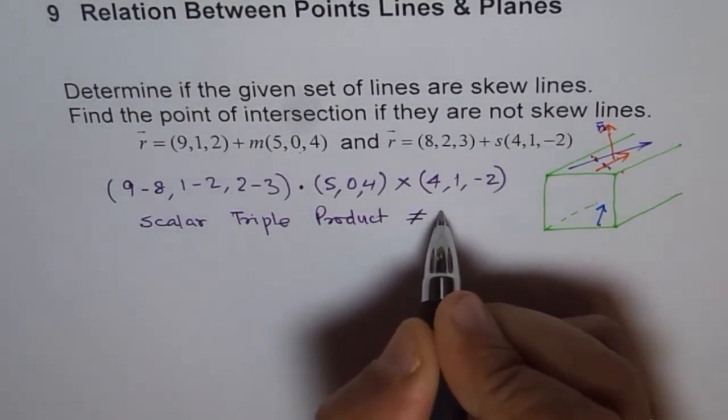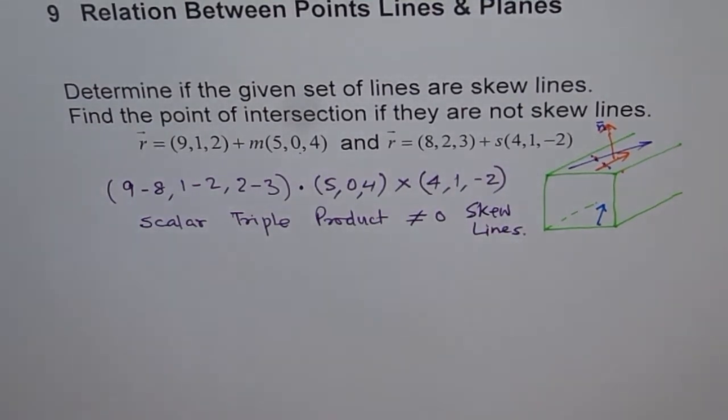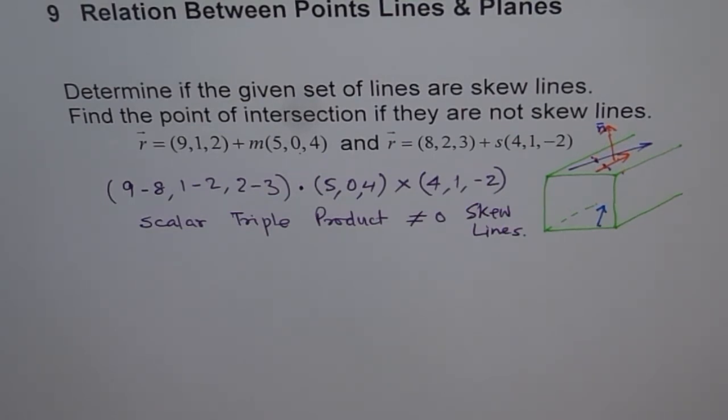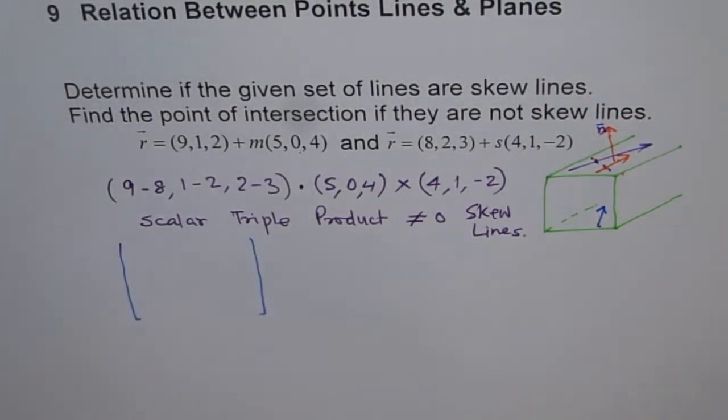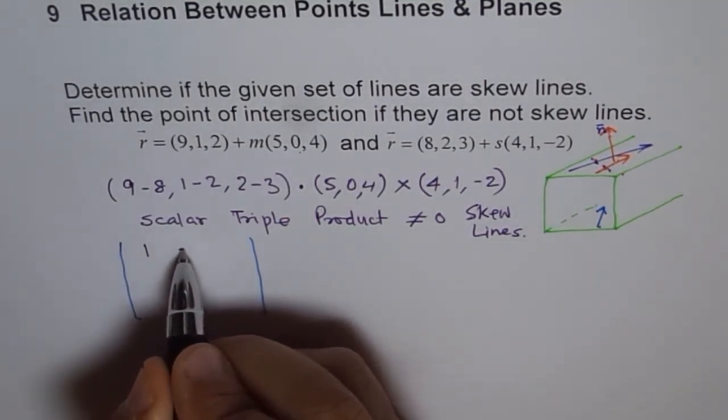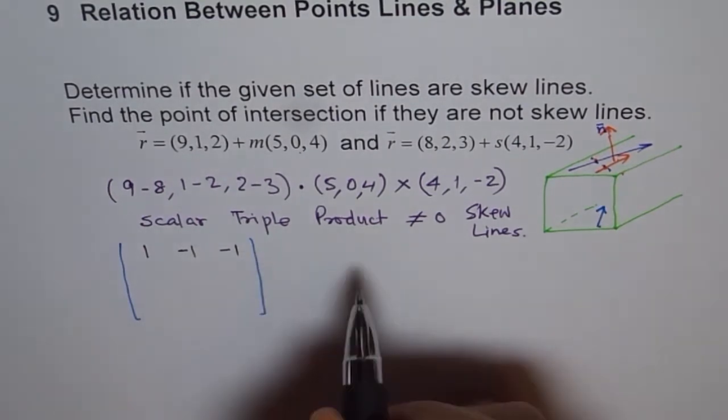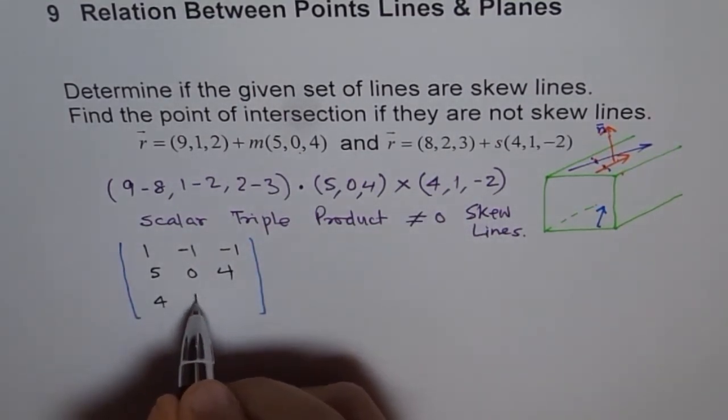If it is not 0, that means skew lines. So, that is what our test is. And we will try to figure out whether it is not or it is. Now, if you are given this kind of equation, if you are to do scalar triple product, of course, what will you do first? First, you will do the cross product. And then, you will do the dot product. But here, I am going to use matrix. Now, what is 9 minus 8? 9 minus 8 is 1. 1 minus 2 is minus 1. 2 minus 3, minus 1. And here, we have 5, 0, 4. And 4, 1, minus 2.